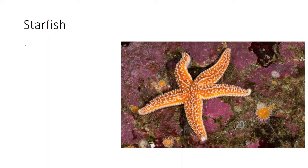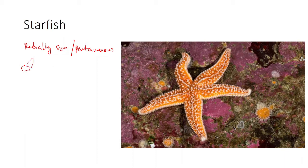Starfish is radially symmetrical and pentamerous. The pentamerous nature is due to the presence of five arms radiating from the central disk. These arms are also known as rays, and generally there are five. However, certain starfish like the solar star have seven to fourteen arms, and Heliaster has more than forty arms. The size is generally 10 to 20 cm in diameter, and their color varies from yellow to brown to purple or orange.